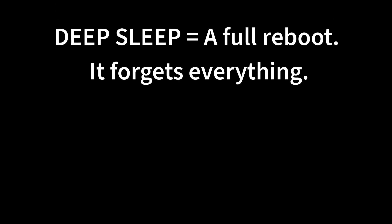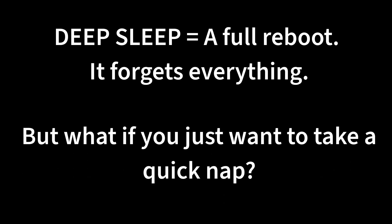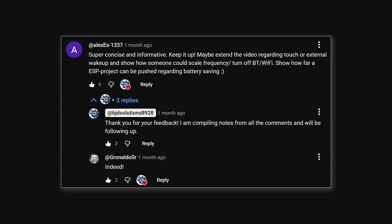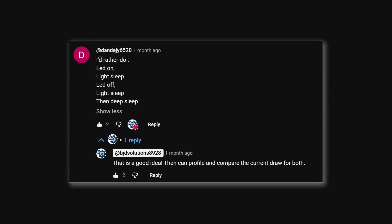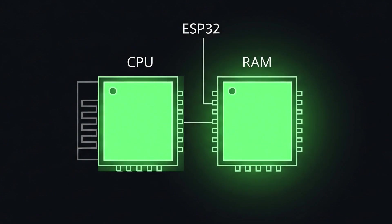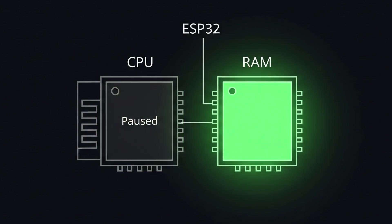But deep sleep has one big limitation. Every wake up is a full reboot which means it forgets everything it was doing. What if you just need to pause for a second without losing your place? This is where our next topic, inspired by your comments, comes in light sleep. In light sleep the CPU pauses but the RAM stays powered on. When it wakes up it resumes exactly where it left off. No reboot. It's faster but uses a bit more power than deep sleep.